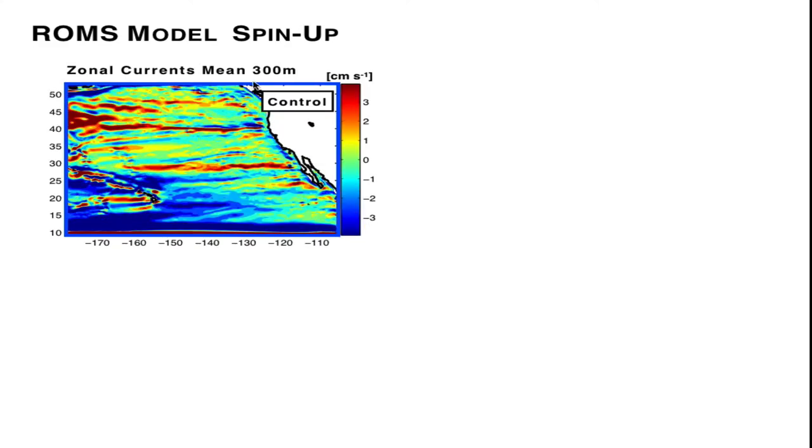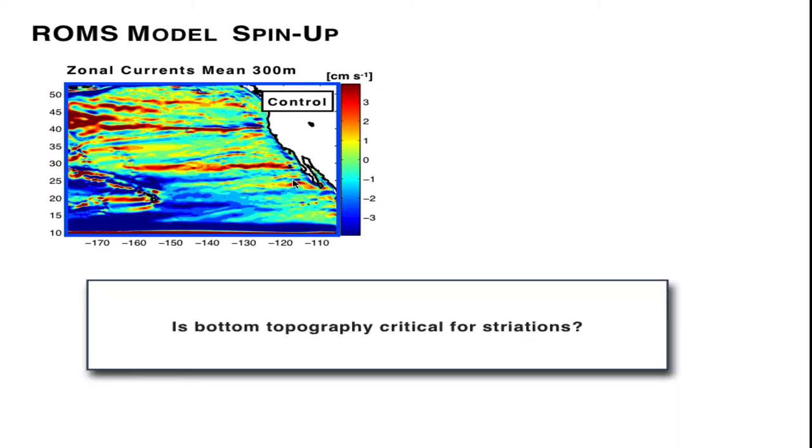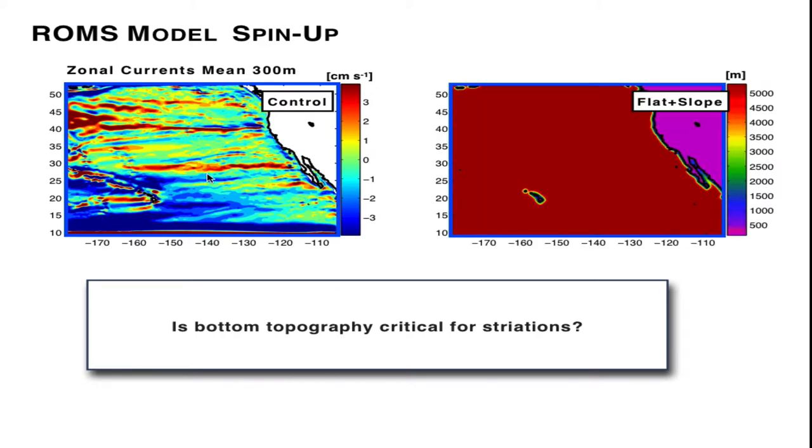Given that topography seems to play a role, let's ask the question, how important is that role? Is bottom topography critical for the striations, especially in the interior? To address that question, we will perform an additional model simulation. In this case, we have a flat topography in the interior with 5,000 meter depth, and we have a continental boundary with a continental slope, which is given here along both the American boundaries and the Hawaiian islands.